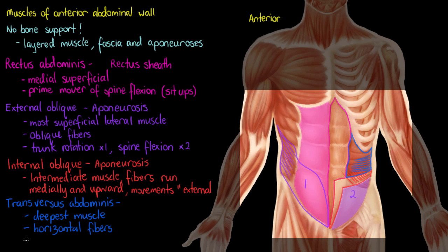Now we can figure out why the fibers run in all these different directions. If we think about the construction of plywood, there are several sheets with the grain running in all separate directions, and this greatly increases the strength and ability to resist tension. The directional changes of these abdominal muscle fibers work in the same way. The movement that our transversus abdominis helps us achieve is to compress our abdomen — squeezing our stomach muscles and compressing everything inward — and that's using our transversus abdominis.